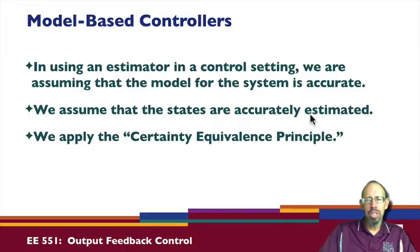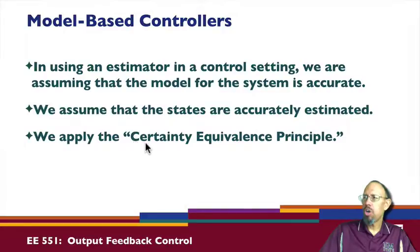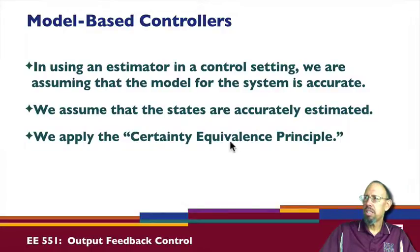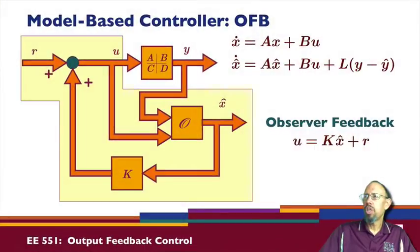State feedback was powerful — if the system was controllable, you could place the poles (eigenvalues) anywhere you want. We're going to apply something called the certainty equivalence principle: if the states are accurately estimated, we can treat the observer or estimated values as equivalent and use those in the control problem. Here is an example of what that looks like.